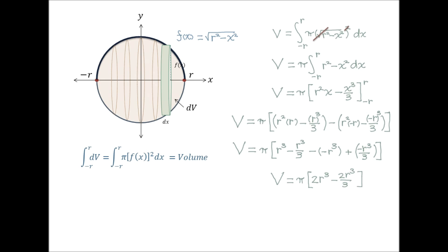And finally, we do our subtraction, and we ultimately end up with 4 over 3 times pi times r cubed, and this here is the volume of a sphere. So there you have it, the derivation for the volume of a sphere using calculus.